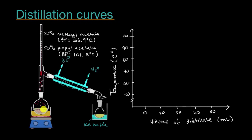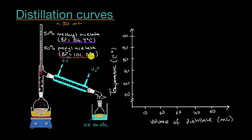Let's say we're trying to distill roughly 50 milliliters that is 50% methyl acetate and 50% propyl acetate. What's interesting is the difference in their boiling points. The boiling point of methyl acetate is 56.9 degrees Celsius, while the boiling point of propyl acetate is a lot higher, 101.5 degrees Celsius. You can imagine, with this fractional distillation set up, we're going to be able to separate these quite readily because of those differences in boiling point.